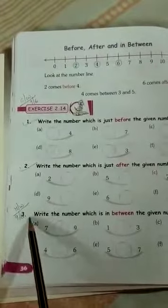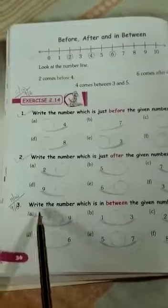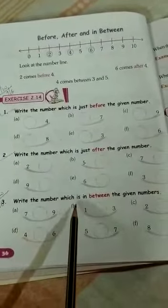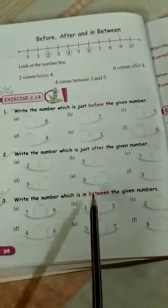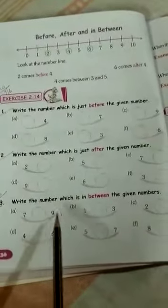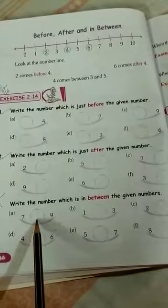And number 3, you will do your homework. This is what, write the number which is in between the given number. In between, means 7 and 9. In between, what you will write?